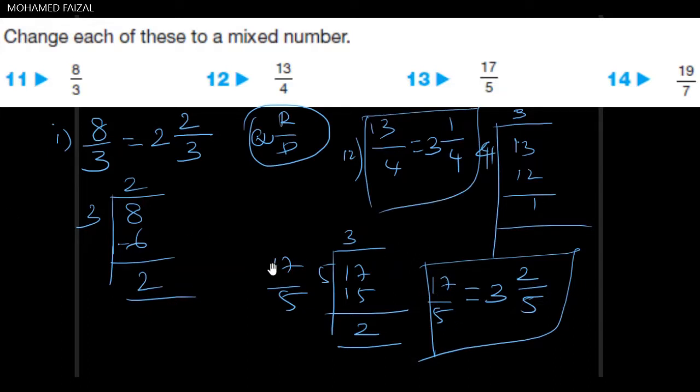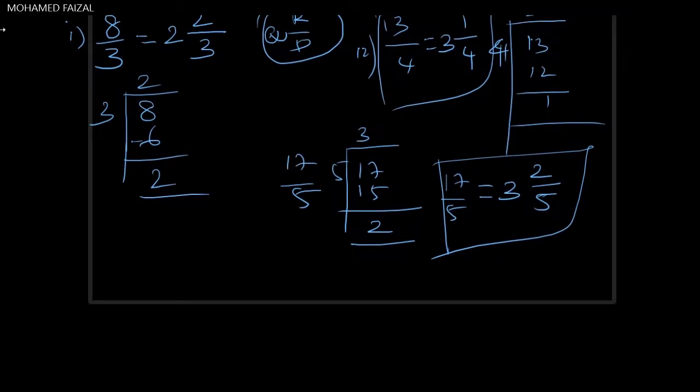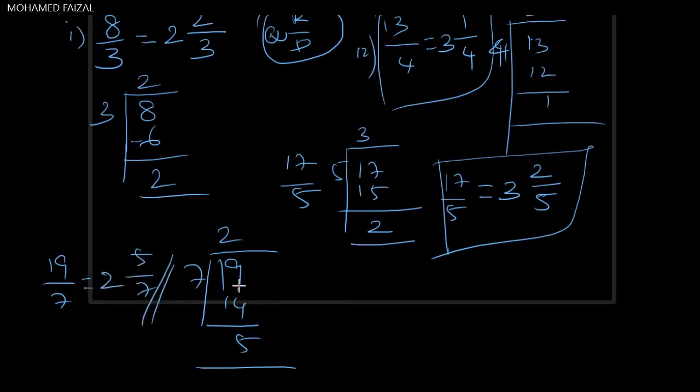Similarly, for 19 by 7, we have to divide 19 with 7. 2 sevens are 14. The balance is 5. 5 cannot be divided by 7. That's why the quotient is 2, and the remainder is 5 by 7, which is the mixed fraction of 19 by 7. In this manner, we can easily conclude, we can easily convert any fraction into one mixed fraction.